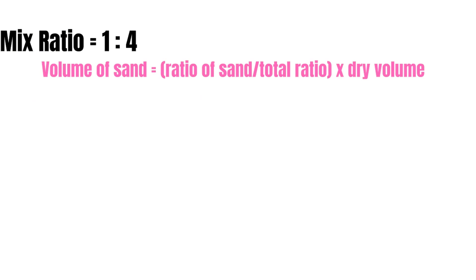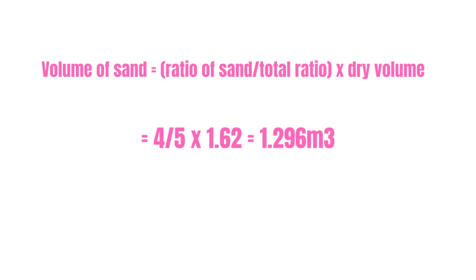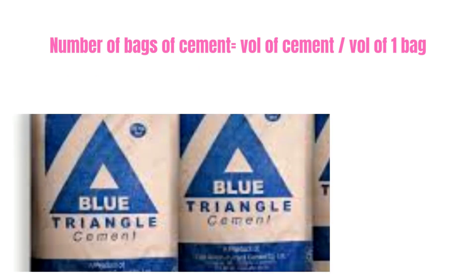Now let us calculate the volume of sand, which will be the ratio of sand divided by the total ratio, multiplied by the dry volume — that is 4 divided by 5, multiplied by 1.62 — which equals 1.296 cubic meters.